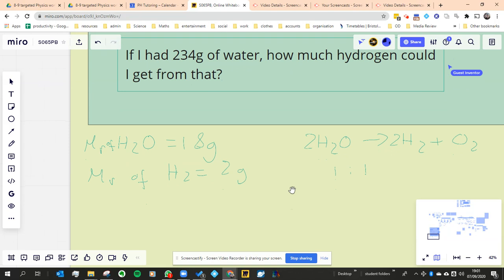So now we go back to the question, and we say, what's it actually asking us? Now we've got the molar masses, we've got the balanced equation. It's saying if I had 234 grams of water, how much hydrogen would I get?